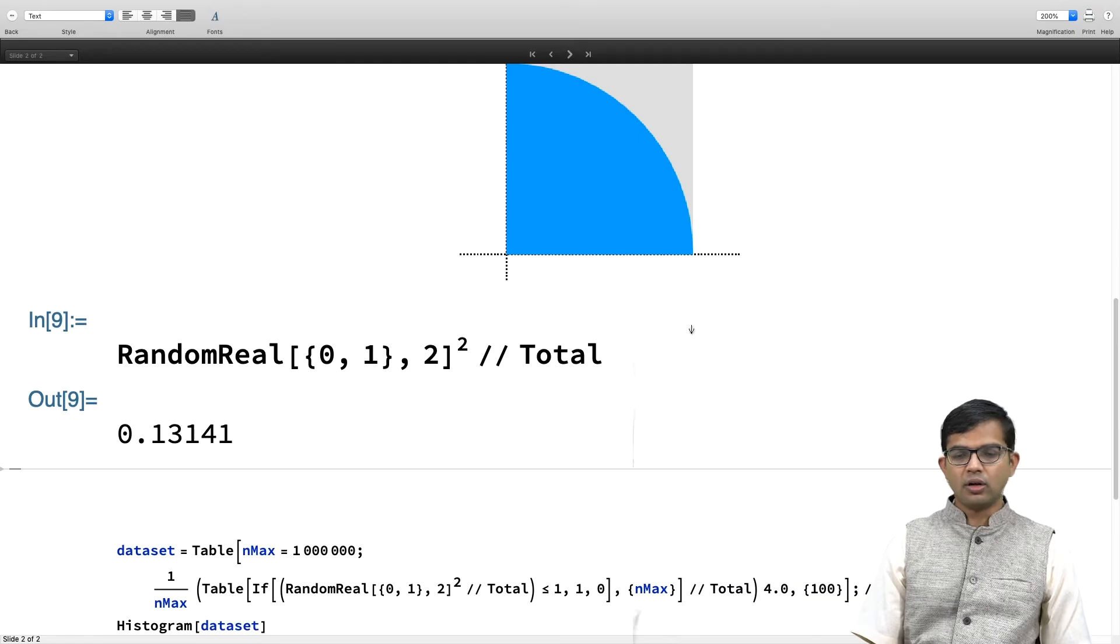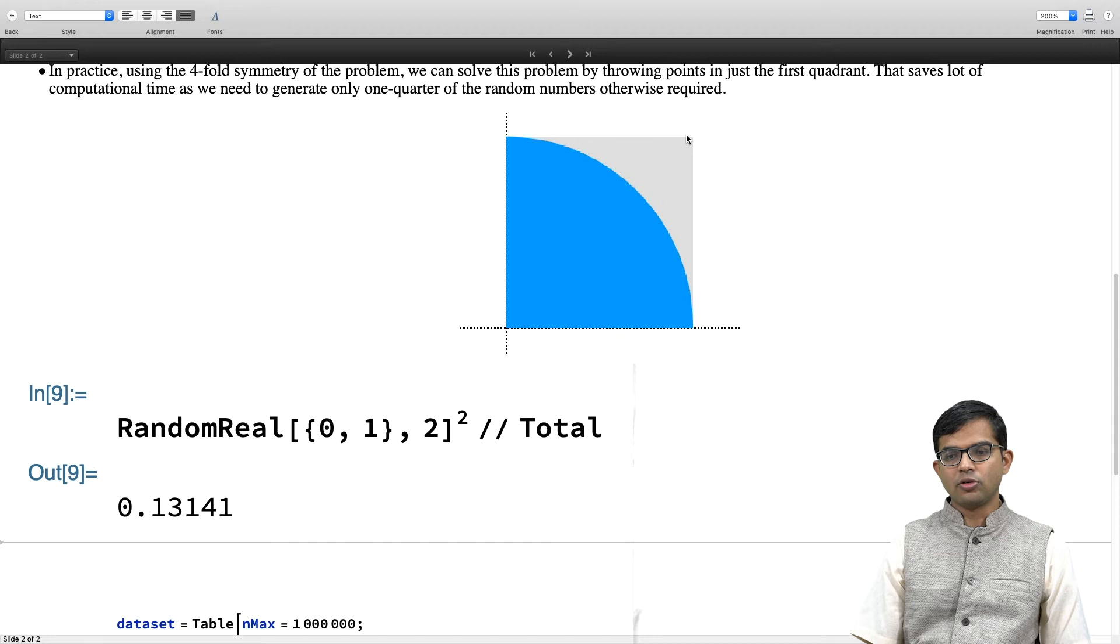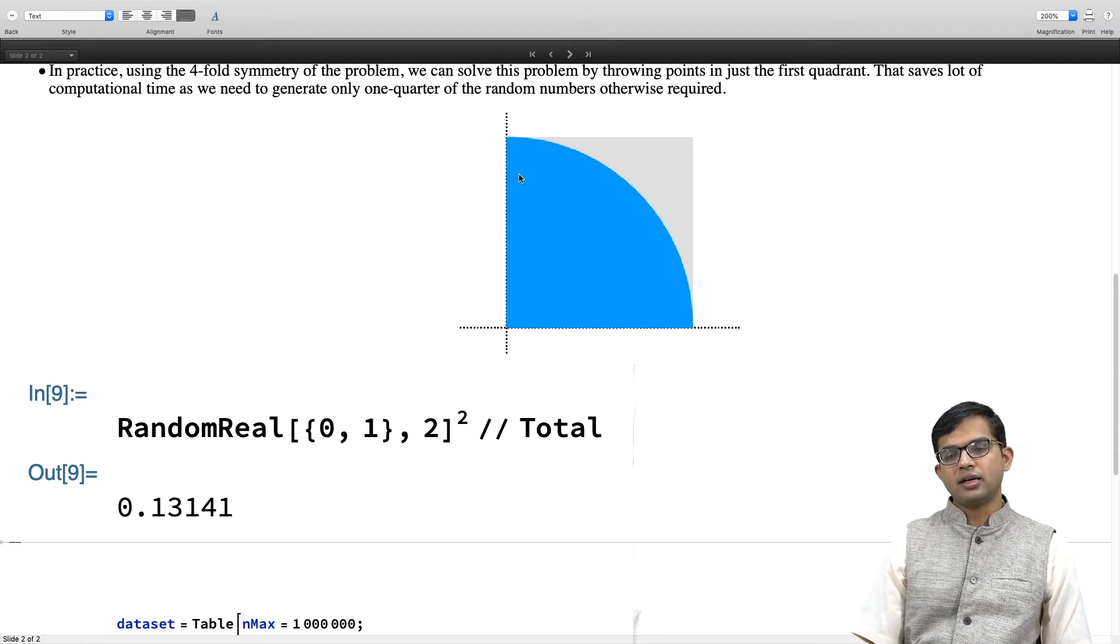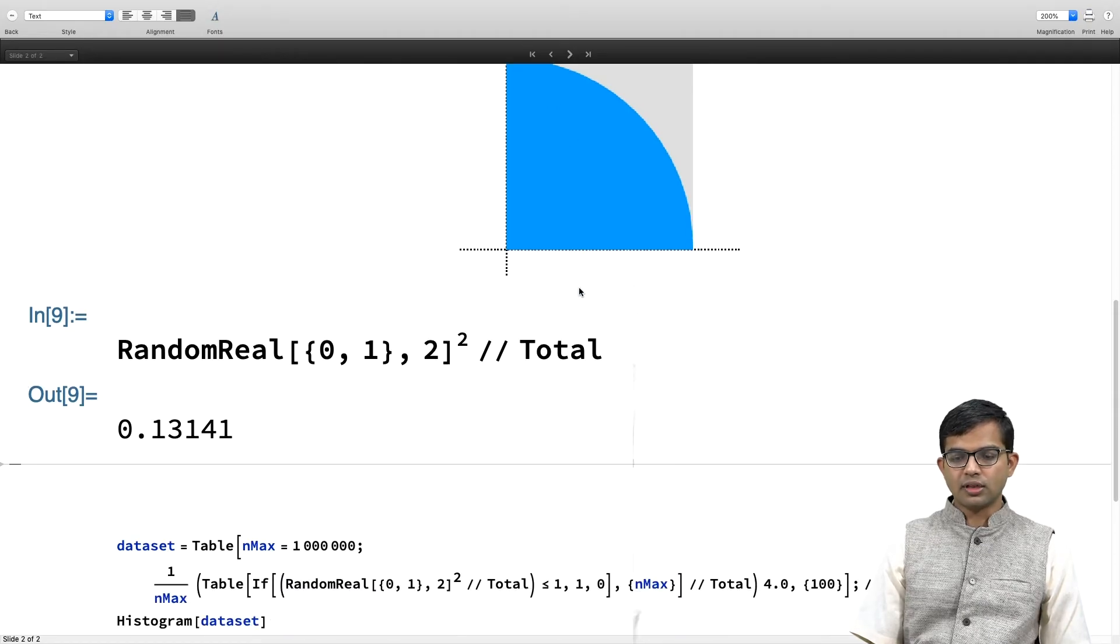This number clearly can go all the way up to 1 plus 1, that is the maximum - you would be somewhere here. You ask how many of these points that I generate will lie inside the inside this quadrant of the circle, and clearly that will happen whenever this distance is less than or equal to 1.